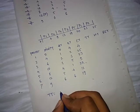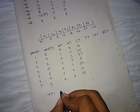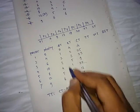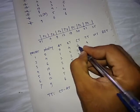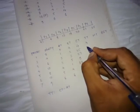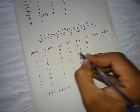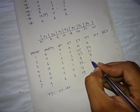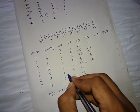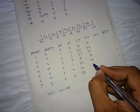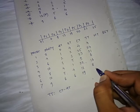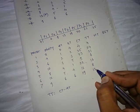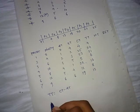Turnaround time is calculated as completion time minus arrival time. So: P1 = 4 − 0 = 4, P2 = 25 − 1 = 24, P3 = 23 − 2 = 21, P4 = 9 − 3 = 6, P5 = 20 − 4 = 16, P6 = 13 − 5 = 8, P7 = 19 − 6 = 13.